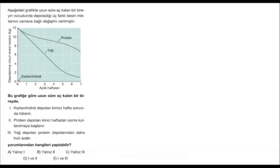Bu grafiğe göre uzun süre aç kalan bir bireyde yorumlarından hangileri yapılabilir? Grafiğimizin X ekseni açlık haftalarını, Y ekseninde ise depolanmış vücut enerji rezervinin kilogram cinsinden değeri verilmiş. Üç farklı besin: karbonhidrat, yağ ve protein. Karbonhidrat depoları birinci hafta sonunda tükenir demiş. Ama grafikte görüldüğü gibi karbonhidrat depoları birinci haftanın sonunda değil başında tükenmiş. O yüzden birinci ifade yanlıştır.